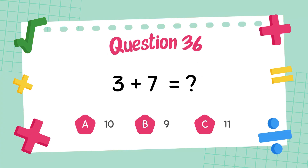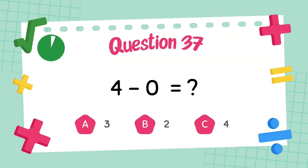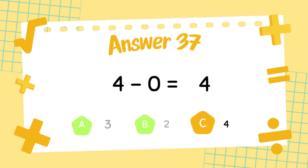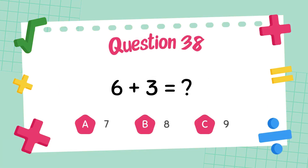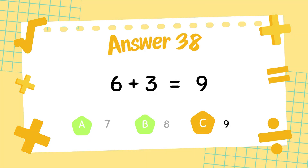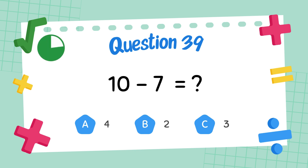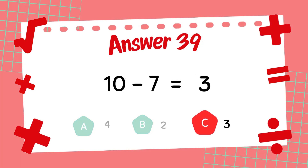What is 3 plus 7? The answer is 10. What is 4 minus 0? The answer is 4. What is 6 plus 3? The answer is 9. What is 10 minus 7? The answer is 3.